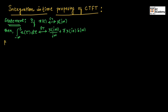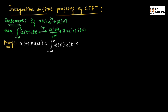Let us prove this. Now, let us take the convolution x of t convoluted with u of t. That can be written as integration of minus infinity to infinity of x of tau times u of t minus tau d tau.